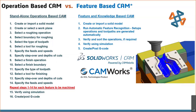One versus the other, there's a lot more involved in operation-based. With the automation in feature-based, it's learning how we machine. The reason the process is so much shorter is that it's looking at the tools you're using inside the technology database inside SOLIDWORKS CAM and CAMWorks, grabbing the tools based on how it sees the features — how it sees the pockets, what fits inside — so it's running off of a knowledge base.